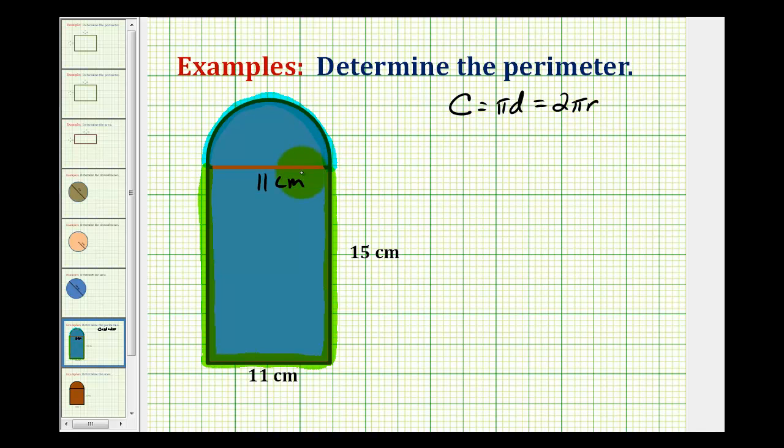And since we're given the length of the diameter, we're going to go ahead and use this first formula. So the perimeter of this figure is going to be equal to half of the circumference of a circle, where the diameter would have a length of 11 centimeters, so we'd have pi times 11 centimeters divided by two.